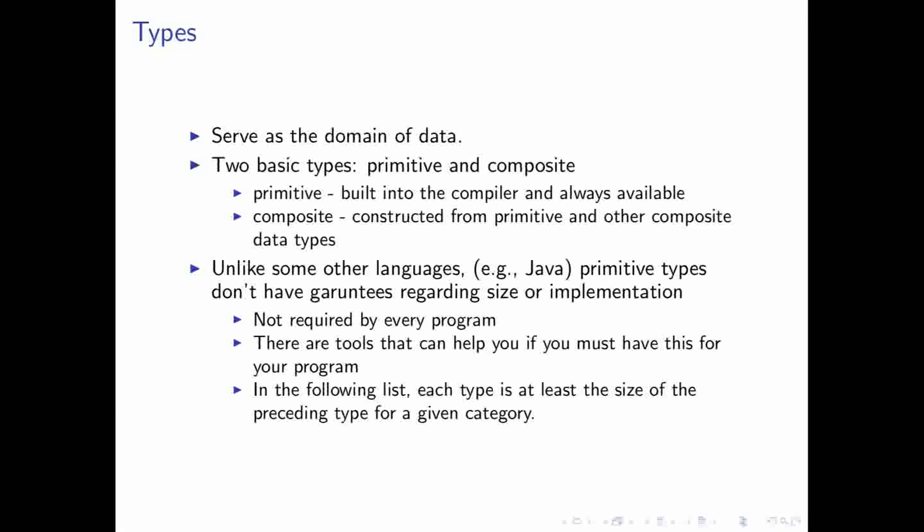And there are two basic categorizations for data types. We have primitive types, which are built into the compiler. And then we have composite types, which are made up of primitive types and then perhaps other composite types.